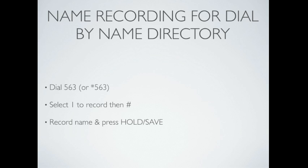One of the most important things to setting up your mailbox actually isn't done in your mailbox. If you have a dial-by-name directory, you need to record your name, otherwise you will not show up in the directory. To do that, you'll typically dial 563, or if that doesn't work, try star 563. Press 1 to record, then pound. Record just your name, and then press hold save.